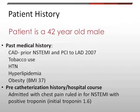I'd like to present this case with a 42-year-old male with prior history of coronary artery disease and a previous non-ST elevation MI with revascularization to his LAD in 2007, as well as a past medical history of tobacco use, hypertension, hyperlipidemia, and obesity. He presented to the emergency room with new-onset chest pain occurring at rest and was admitted to the hospital where he ruled in for a non-ST elevation MI with a positive troponin, initially measured at 1.6 on admission.